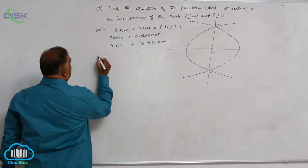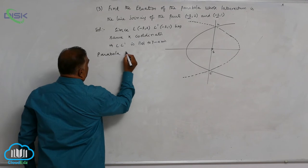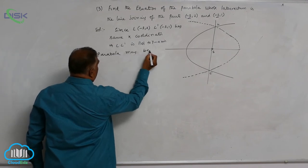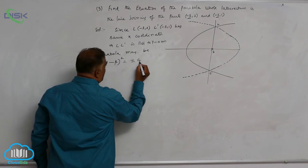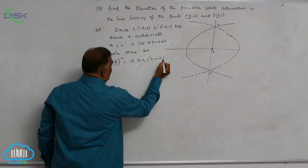So parabola may be (y - β)² = ±4a(x - α).